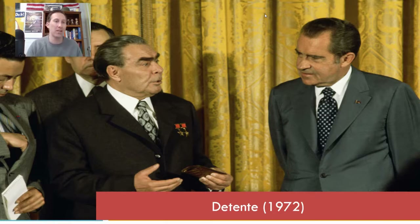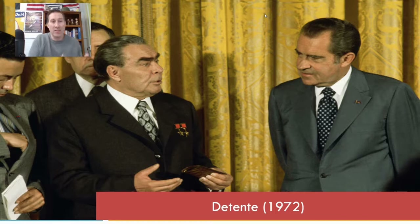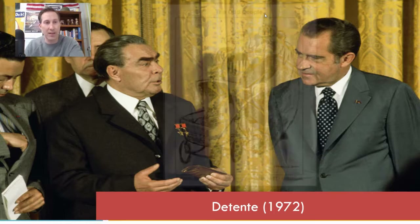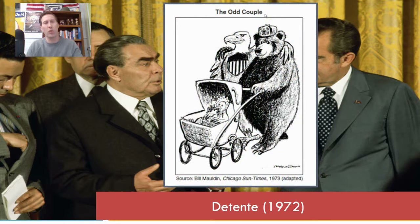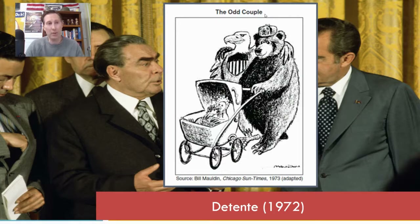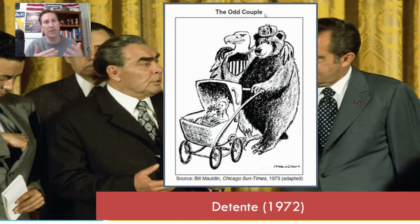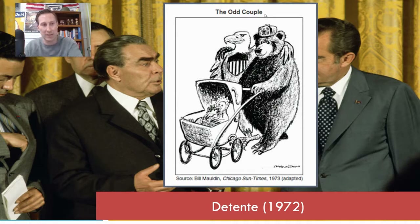Détente was this easing of tensions between the United States and the Soviet Union — the capitalist Western world and the communist East. Both countries had a lot to gain from this thawing of tensions. Most notably, it would allow us to increase trade, and secondly, it would allow us to slow down the arms race that had been going on since the 1950s.